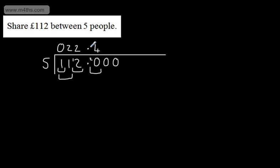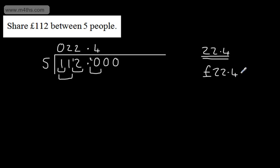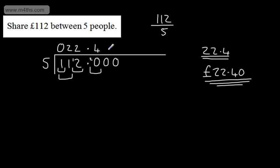This gives us 0.224, so I can write this as 22.4. If I want to give this correctly in terms of pounds, it's going to be £22.40. So I'm using short division, or the bus stop method, to find this answer. If you rewrite it, 112 divided by 5 has 5 on the outside and 112 on the inside.